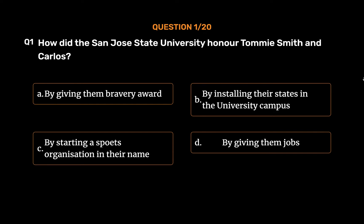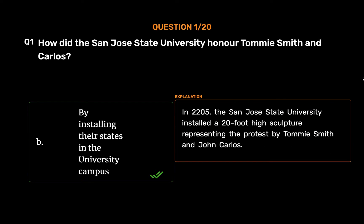The correct answer is Option B: By installing their statues in the university campus. In 2005, San Jose State University installed a 20-foot high sculpture representing the protest by Tommy Smith and John Carlos.